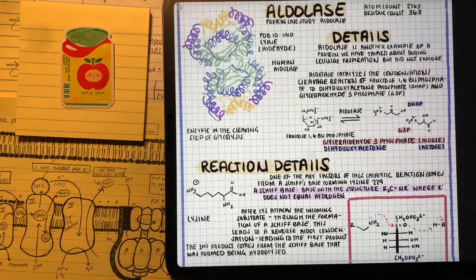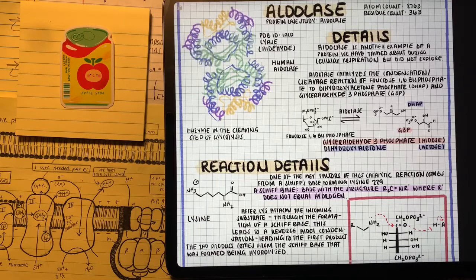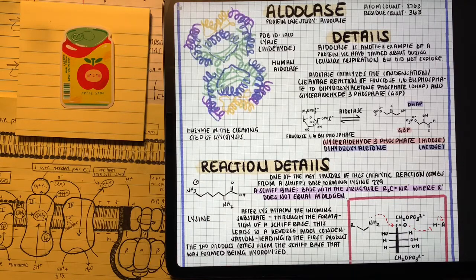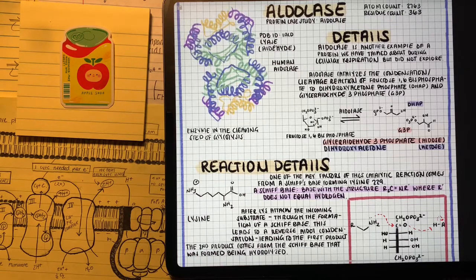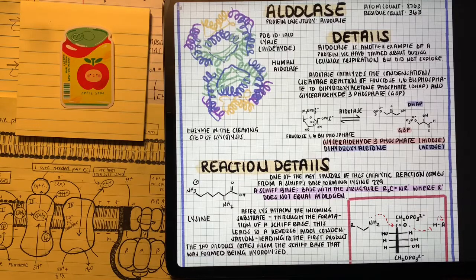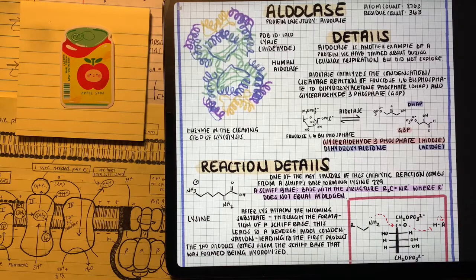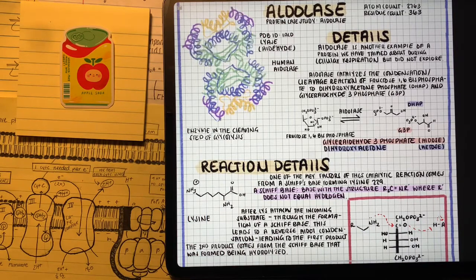Forming fructose 1,6-bisphosphate through phosphofructokinase, we're ready for the next enzyme complex, which is aldolase. Aldolase is going to cleave fructose 1,6-bisphosphate into two molecules: dihydroxyacetone and glyceraldehyde-3-phosphate. An interesting fact about the reaction of aldolase is that there's a really important lysine residue at the active site that's going to act as a Schiff base. This is going to form a reverse aldol condensation reaction.